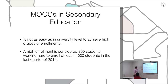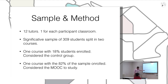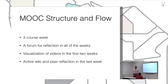These 300 students plus the control group have 12 tutors in each physical classroom. It's a blended learning model — the course is conducted online, but offline in the real world students have a teacher that helps them. 18% of students are in the control group, 82% are in the MOOC. It's a three-week course. We have a forum for reflection and peer tutorials, video content in the first two weeks, and an active wiki with peer reflection in the last week.